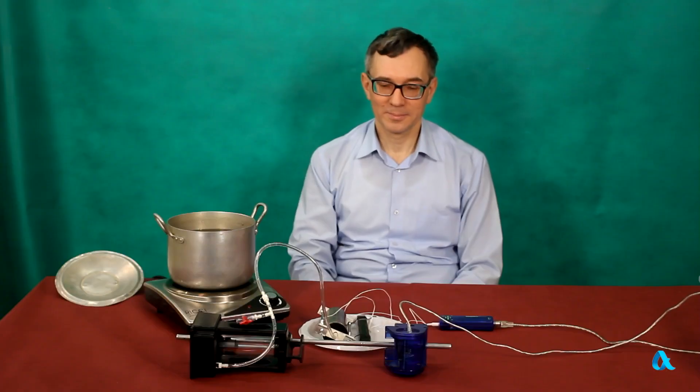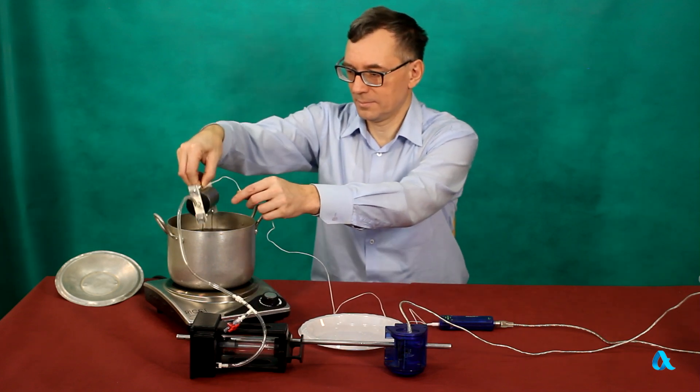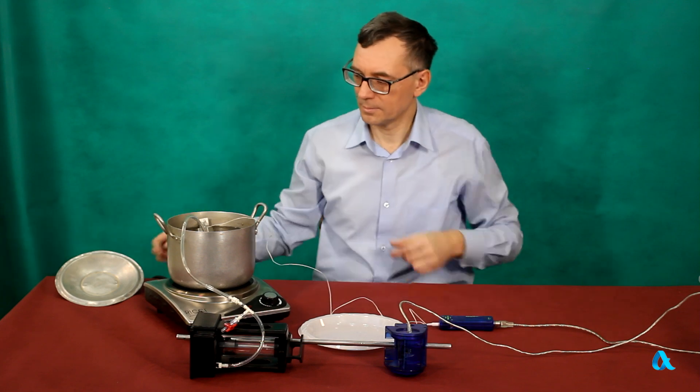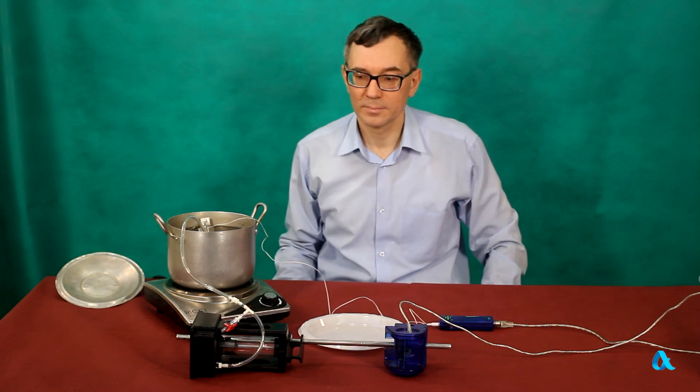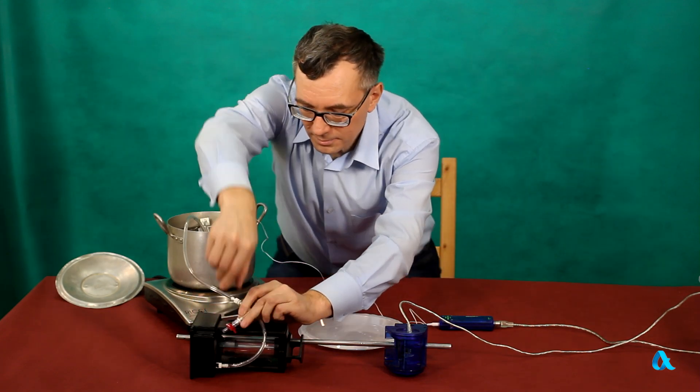Gay-Lussac's law reveals the connection between volume and temperature at constant pressure. Again, we immerse a vessel in cold water and connect it via a tube to a calibrated cylinder with a tight piston moving inside it. We shut off the valve and start heating the water.